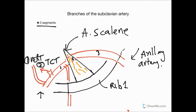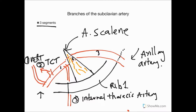The third branch coming down here is the internal thoracic artery. That's an important one. The internal thoracic artery gives off anterior intercostal perforating branches that supply the breast, mainly from the second to the fourth intercostal spaces. So the second to fourth intercostals from the internal thoracic artery are supplying the breast.